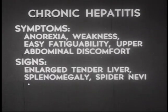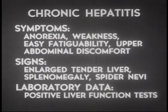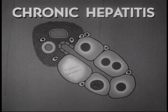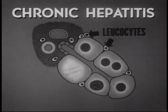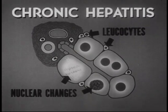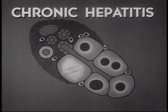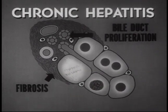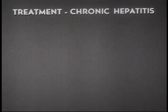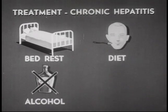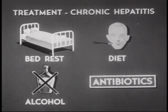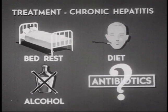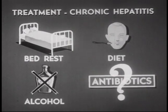Physical signs may include an enlarged, tender liver, splenomegaly, and spider nevi. Liver function tests may be positive. Liver biopsy is necessary to establish the diagnosis. The histologic picture is that of continuing inflammatory and regenerative changes. In a few cases, the appearance of bile duct proliferation and fibrosis suggests the development of cirrhosis. The treatment of chronic hepatitis is discouraging — it involves prolonged periods of bed rest, continued dietary therapy, and abstinence from alcohol. There is indication that aureomycin is beneficial in some cases. Many cases of chronic hepatitis will recover eventually; the outcome in others is unknown.